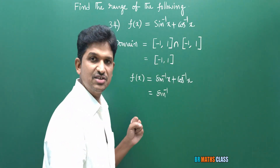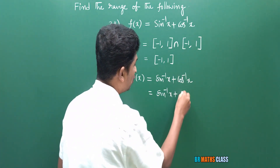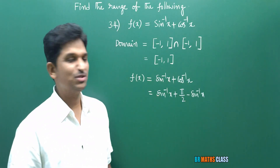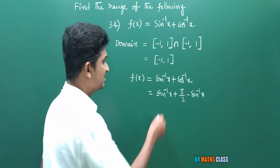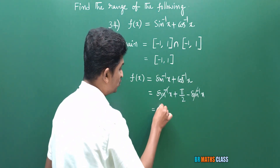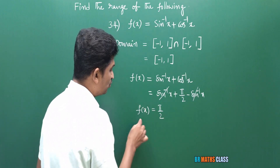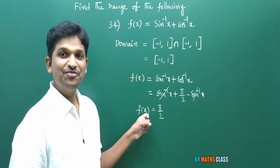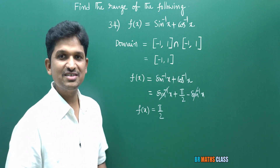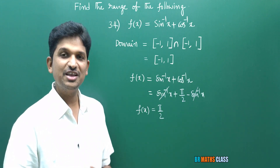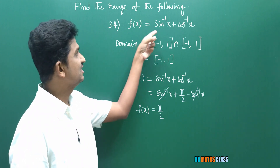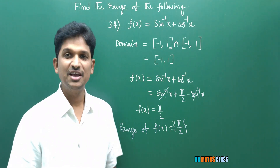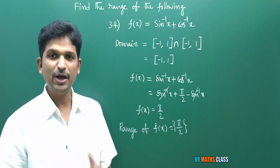Alternatively, we can simplify: cos⁻¹x = π/2 − sin⁻¹x, so sin⁻¹x + cos⁻¹x = sin⁻¹x + (π/2 − sin⁻¹x). Both sin⁻¹x terms cancel, giving f(x) = π/2. Whatever x value you take in the domain, f(x) always equals π/2, so the range contains only one element: π/2. I hope you understand this problem. Now we move to the next problem.